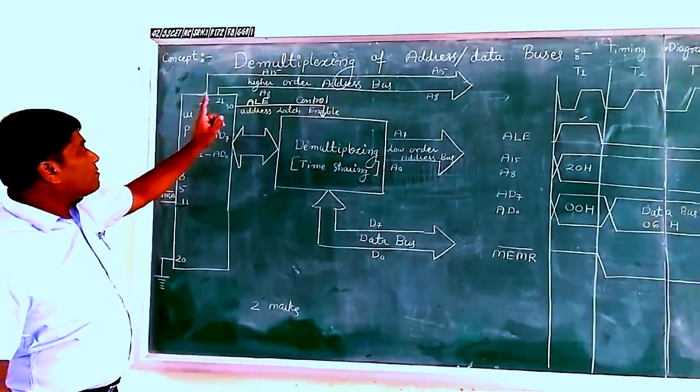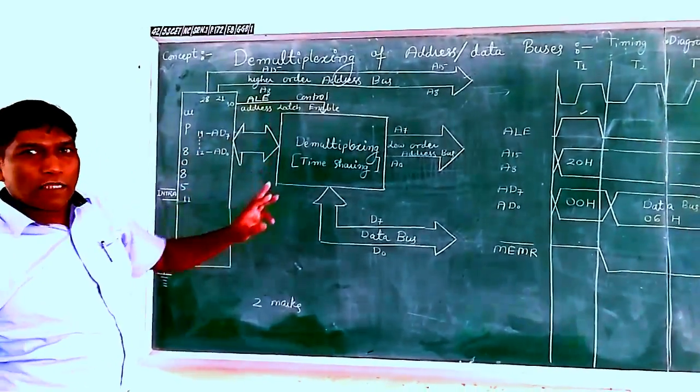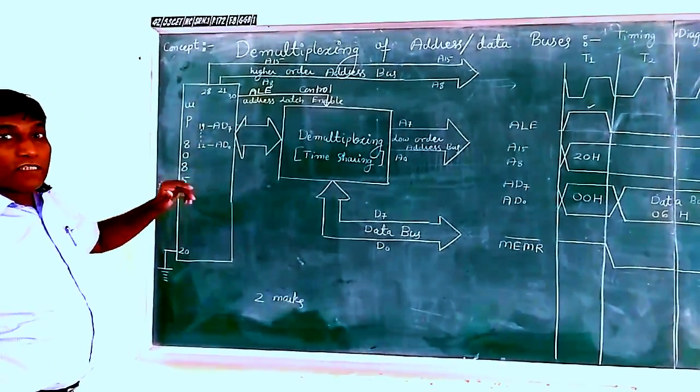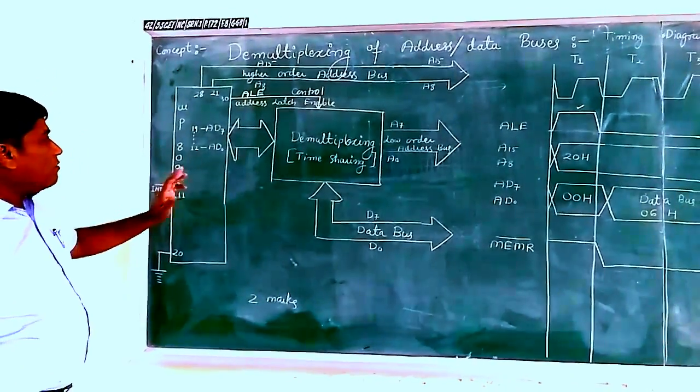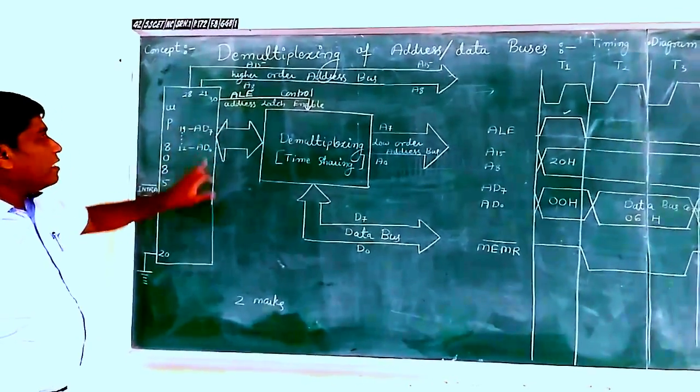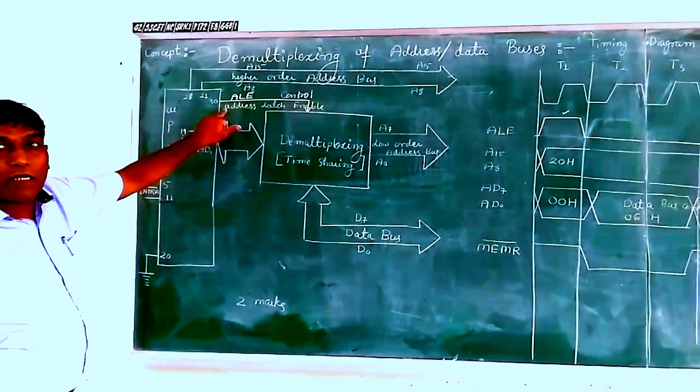Okay, today we will explain the de-multiplexing of address and data bus. De-multiplexing means time sharing. What we are doing is sharing the lower order address buses timely with the help of address latch enable signal.